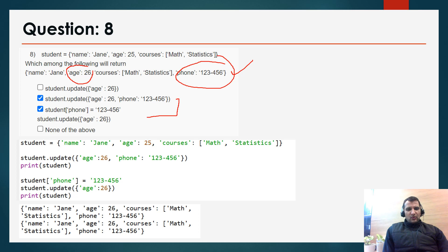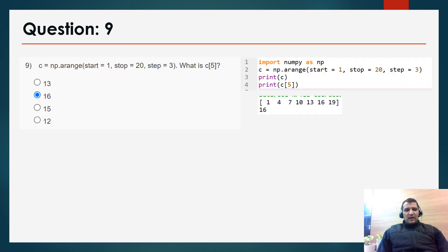Question 9: c = np.arange(start=1, stop=20, step=3). This generates an array starting from 1 with intervals of 3 up to 20: [1, 4, 7, 10, 13, 16, 19]. What is c[5]? Index 0=1, 1=4, 2=7, 3=10, 4=13, 5=16. So the correct answer is 16, option b.